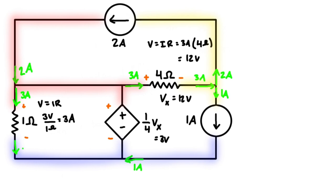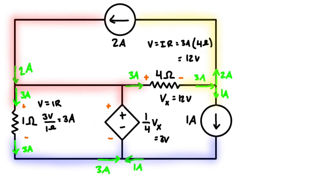With three amps coming into this junction and one amp also coming in, we must have four amps going out upward. At the next junction, four amps come in and three go out, so one amp must flow the other way for KCL to balance. That one amp then confirms the total: three amps coming in and three amps going out at the original junction.